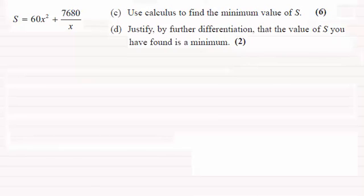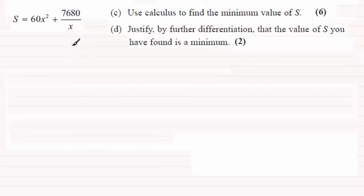So in order to find a minimum value of S, this will be where the gradient of the curve equals zero. Mind you, that would be true for any stationary point — maximum or minimum.